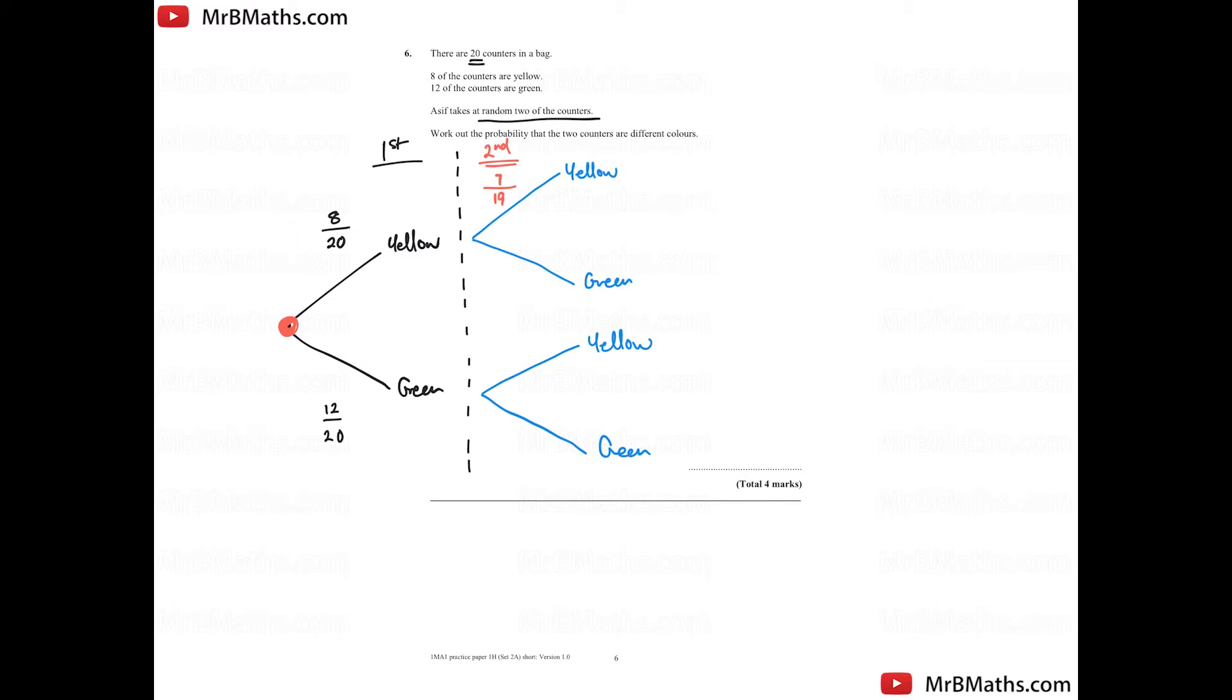So basically what's happened is the green has now got a higher chance of being chosen because one yellow has been chosen. So this will be 12 out of 19. Now if I go for this bottom section here where the green has been chosen, the yellow will stay at 8. But it will also go to 8 over 19. But because through this path, the green has been chosen, this goes to 11 out of 19.